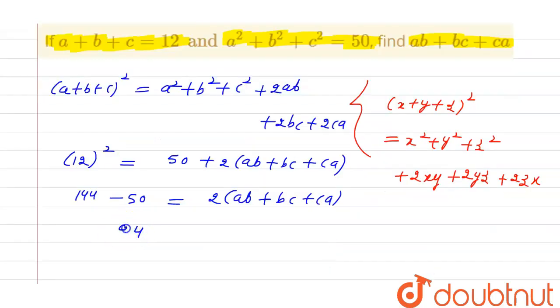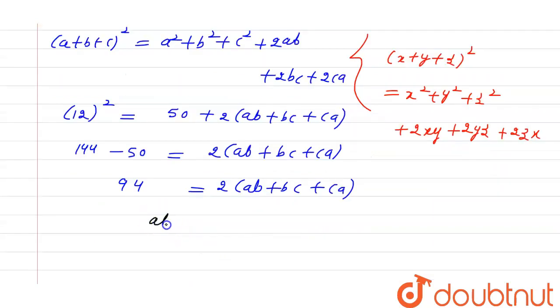94 is equal to twice of ab plus bc plus ca. So now we can calculate the value of ab plus bc plus ca, which is equal to 94 divided by 2. So ab plus bc plus ca is equal to 47.